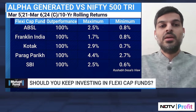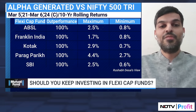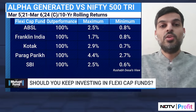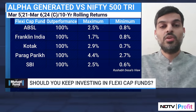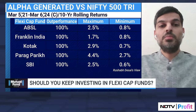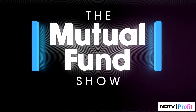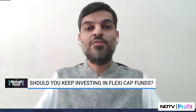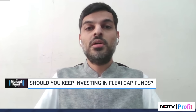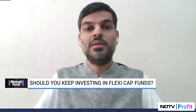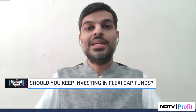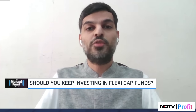Some top-performing funds which have had a 100 percent outperformance strike rate since inception include Aditya Birla FlexiCap Fund, Franklin India FlexiCap Fund, Kotak FlexiCap Fund, and Parag Parikh FlexiCap Fund. These have given 100 percent outperformance strike rate over a longer period on a 10-year rolling basis. An ideal outperformance strike rate should be 70 percent and above. It's also important to look at a fund from its inception as well as from a recent point of view — even if a fund is consistently outperforming for a couple of years recently, I think that is a very good sign.